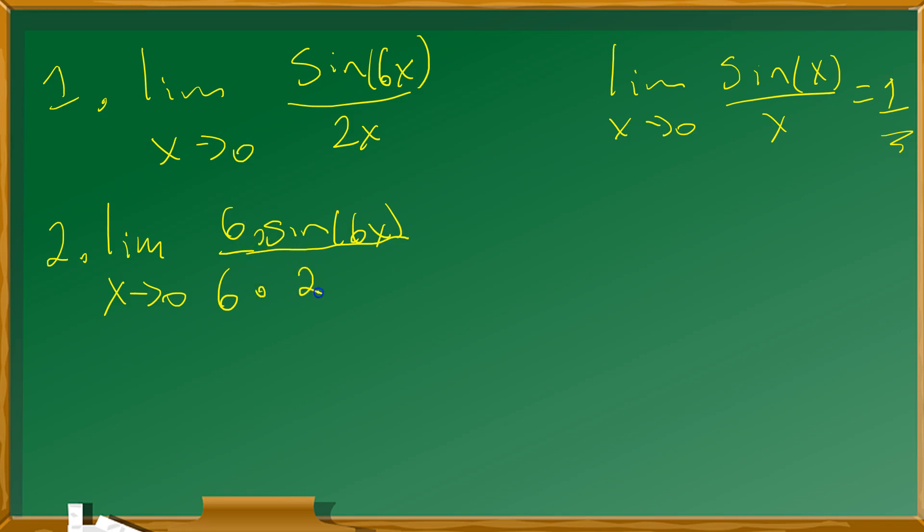Our goal is to make our limit, which is sine of 6x over 2x, look like this limit over here. This is a basic standard limit where you have sine of x over x. In other words, you want to be sure that this part and this part look the same. Right now 6x and 2x don't look that way. They're not the same. That's why I'm multiplying by 6 over 6 to make them look the same.